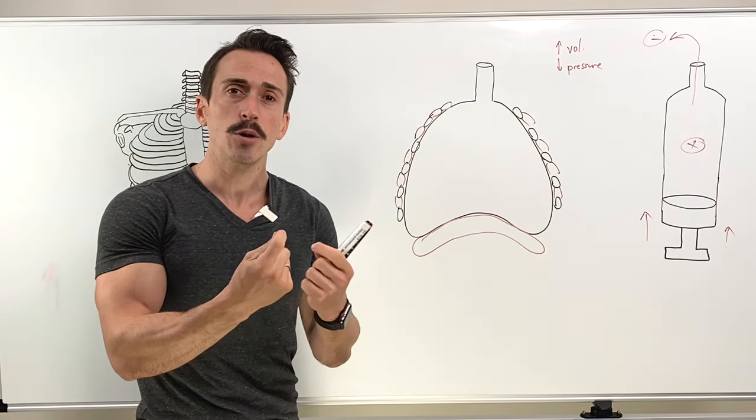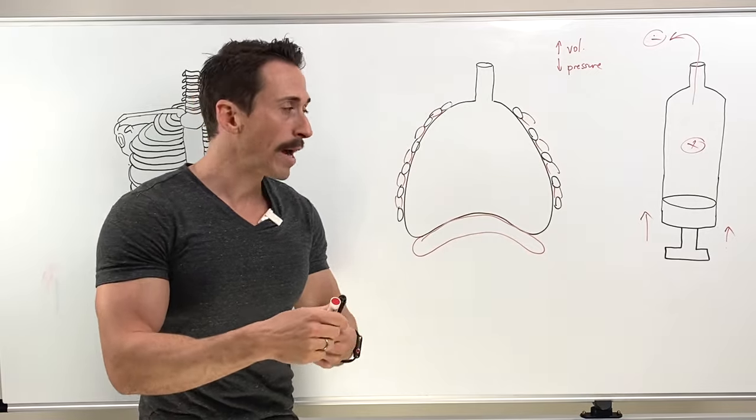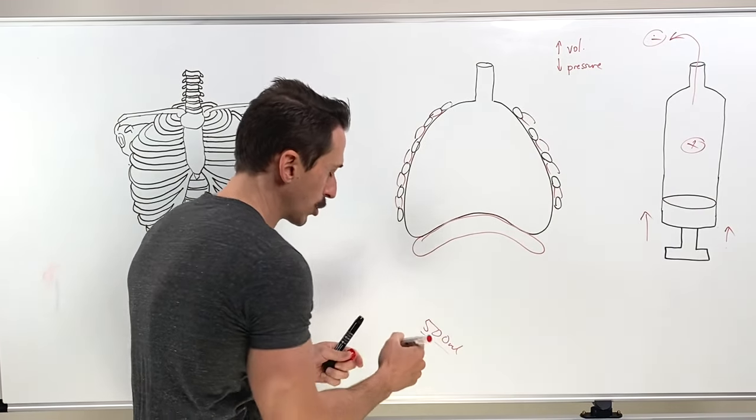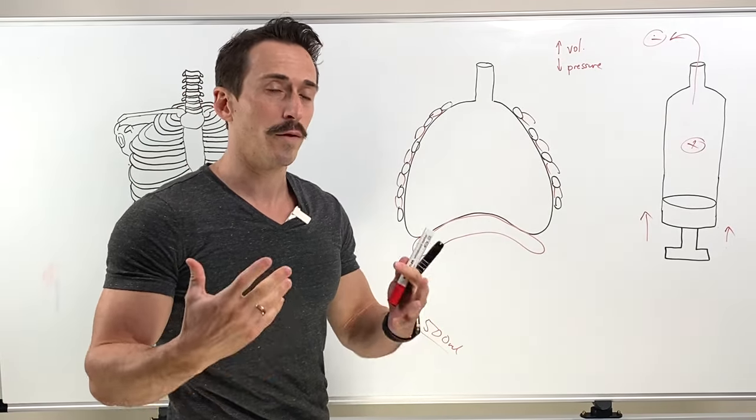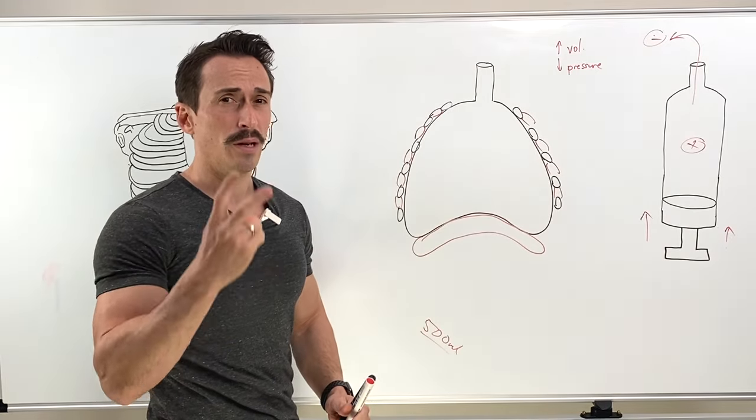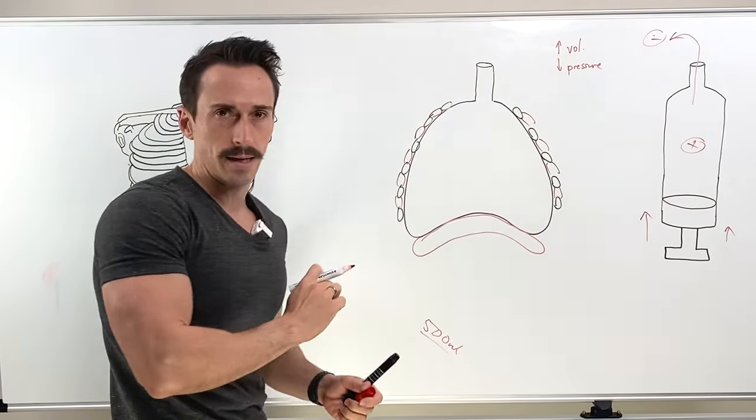So the breath in that you are taking is called a quiet breath and it's around about 500 mils, which sounds like a lot, but it's not when you consider a forceful inspiration. Now, to take this quiet breath in, you only really recruit two muscle groups.